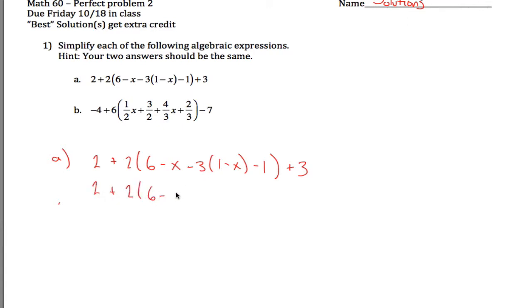So if you do that, negative 3 times positive 1 is negative 3. Negative 3 times negative x is positive 3x because a negative times a negative is positive. That takes me here.